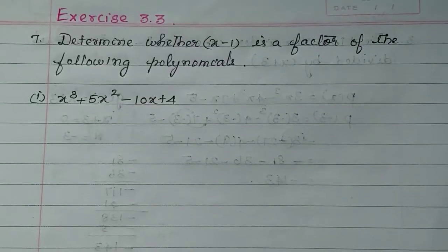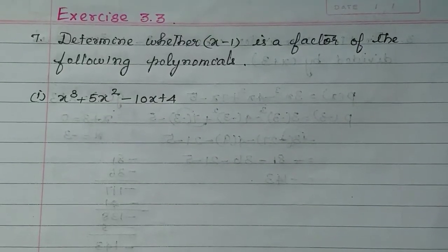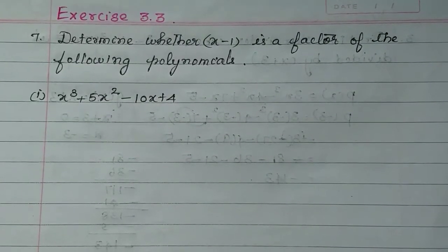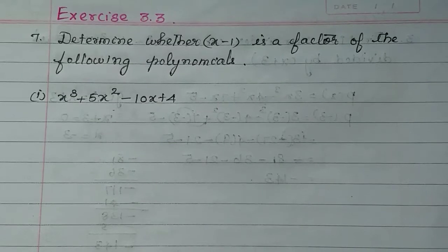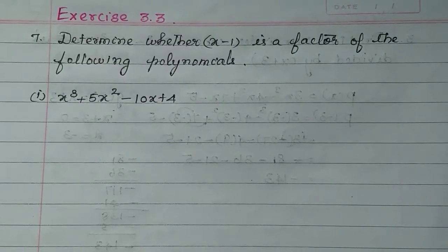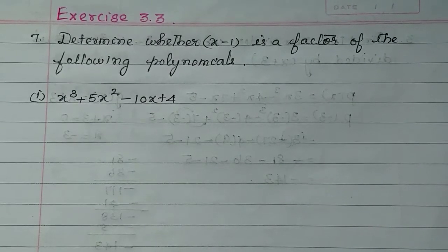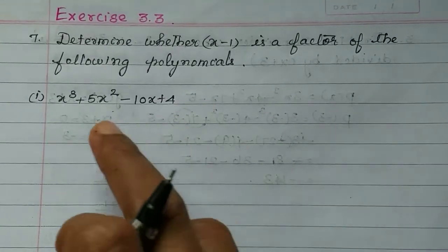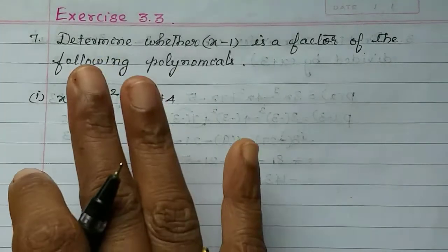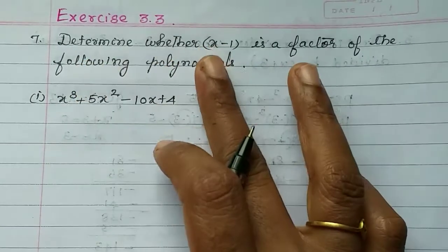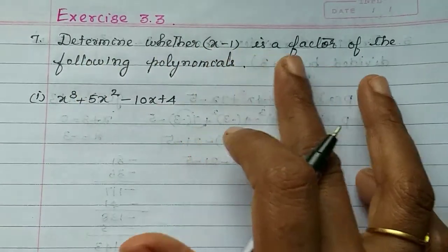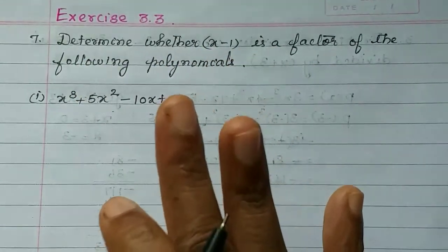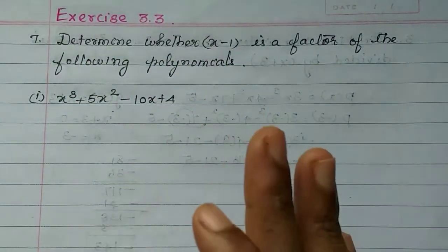Hi students, in this video we are in exercise 3.3 in the 7th exam. Determine whether x minus 1 is a factor of the following polynomials. If you have two polynomials, you can see the first subdivision: determine whether x minus 1 is a factor — then it is a factor theorem.